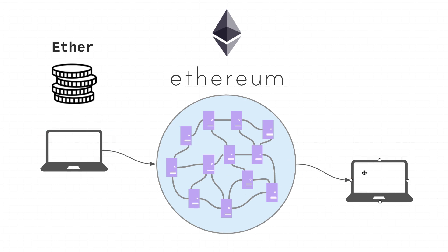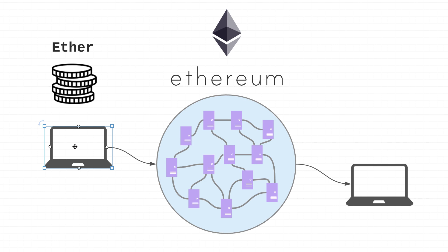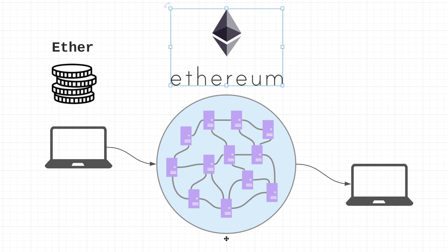Another thing I want to mention is that you'll often hear people saying things like 'hey send me five Ethereum' or 'I'm gonna send you three Ethereum.' Ethereum is technically the name of the network, so this isn't correct terminology. What they actually mean is 'send me five ether' or 'I'm gonna send you five ether.' So Ethereum is the name of the overall network, and ether is the unit of currency used by Ethereum.